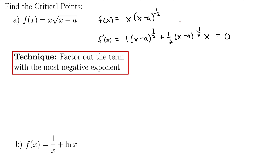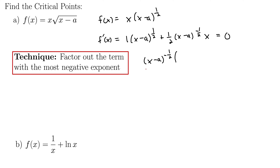Factoring out the term with the most negative exponent, which is x minus a to the negative 1 half, brings it out to the front. When you factor something out to the front, you're dividing all the terms left behind by that factor. When you divide by a term, you subtract the exponents. So we have left behind the quantity x minus a to the 1 half minus a negative 1 half.